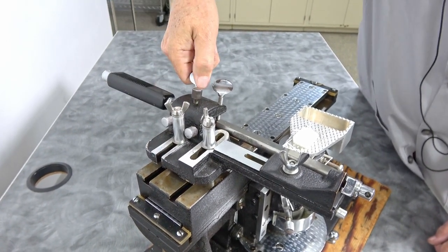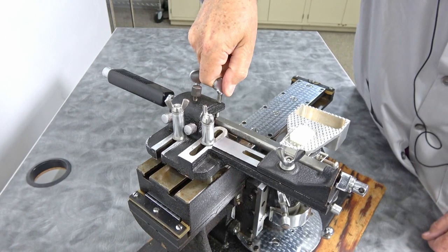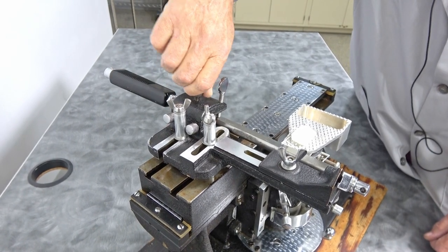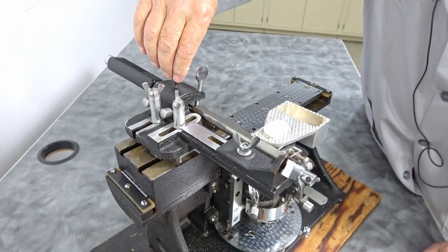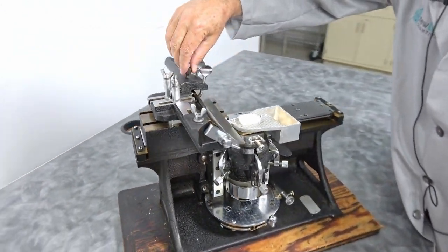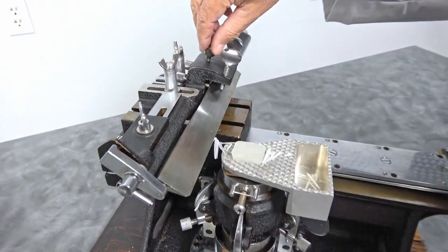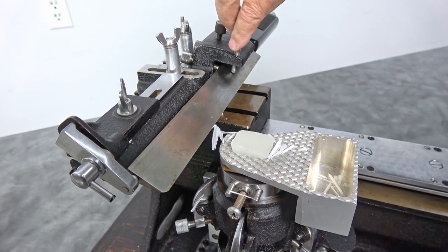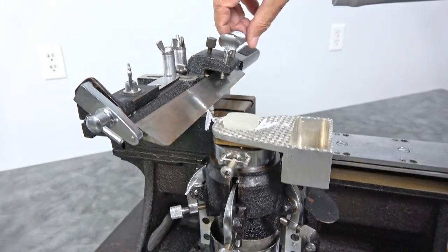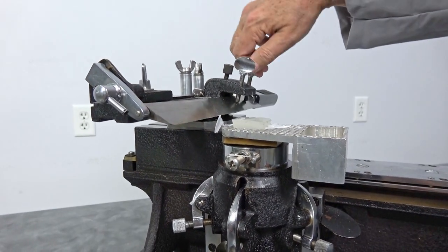We can change the angle of attack on the knife by using this knob here. It'll change your blade angle up and down. You can see it there, it is a balancing act because as you do something with one you have to counter it with something else.